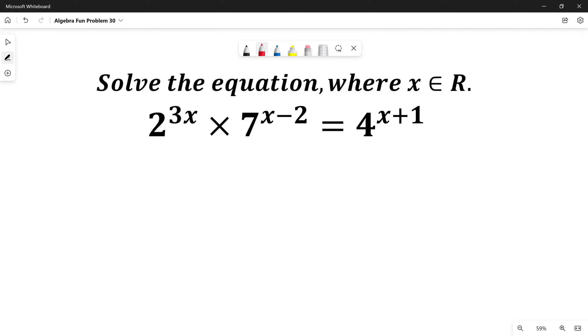Solve the equation where x belongs to real numbers: 2^(3x) × 7^(x-2) = 4^(x+1). At this moment I encourage you to pause the video and solve it by yourself.